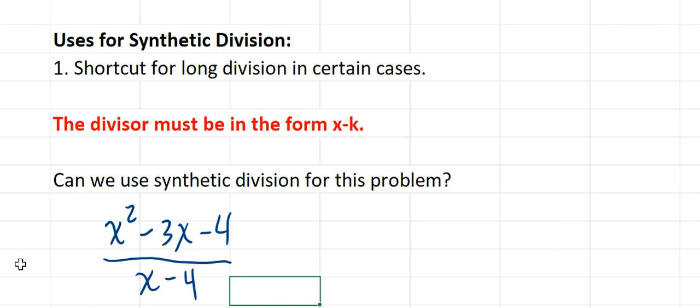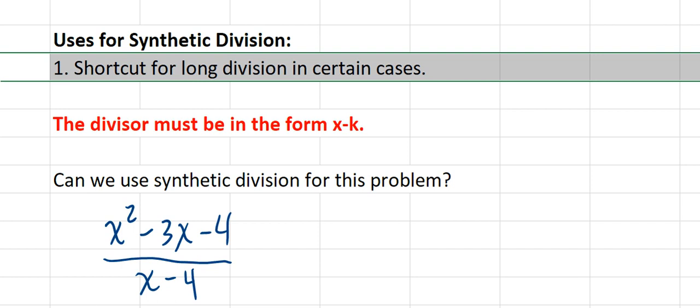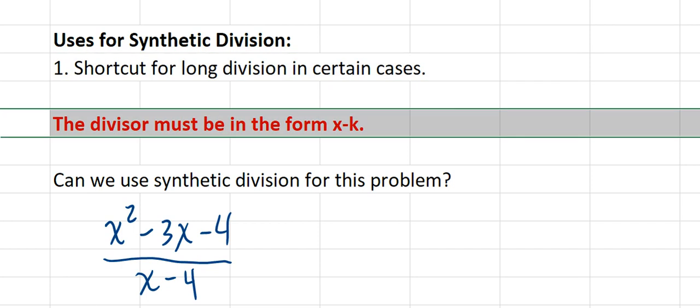The first use for synthetic division is what most people know it for: a shortcut for long division. It only works when you have the divisor in a certain form, so you need to be able to identify when synthetic division can be used and when it cannot. There are ways to force the ability to use synthetic division, but it usually ends up involving fractions. So if the divisor is not already in the correct form, I'm going to recommend long division instead.